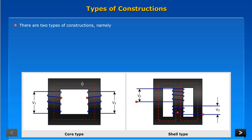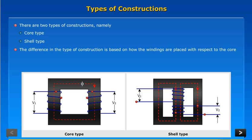There are two types of constructions, namely core type and shell type. The difference in the type of construction is based on how the windings are placed with respect to the core.